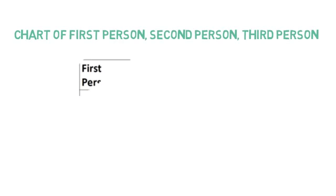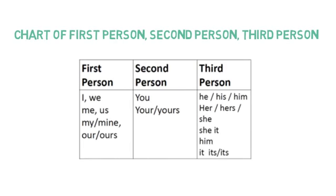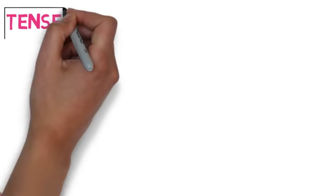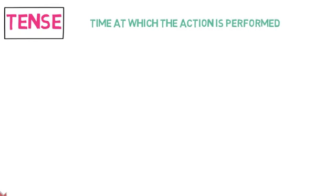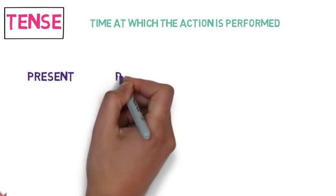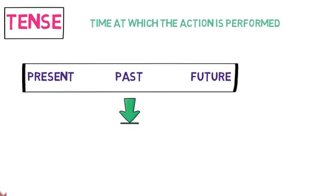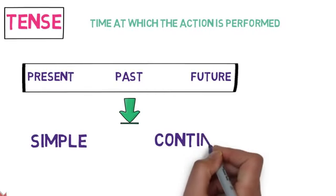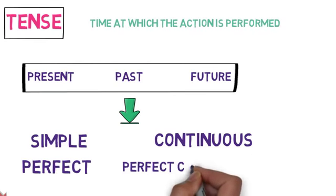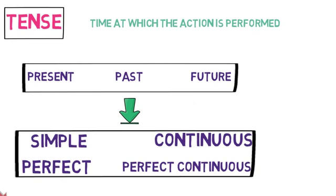For the complete chart of first person, second person, and third person, please refer to this image. Now let's look into tenses. Tense denotes at which time the action is performed. Tenses are mainly divided into three types: present, past and future, and they are subdivided into four subtypes: simple, continuous, perfect and perfect continuous. So in total there are 12 tenses. If you want to recall or learn tenses, links will be provided in the description.